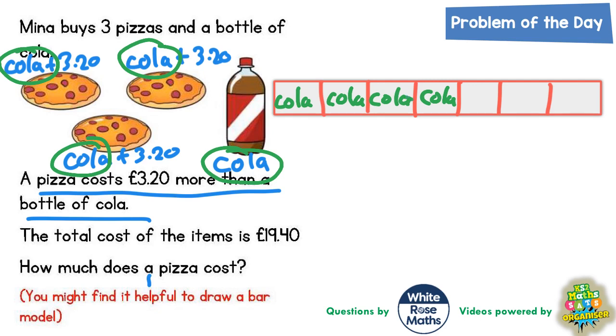And then we've got three lots of £3.20. So £3.20, £3.20, £3.20. And that would be the total of everything in the order.